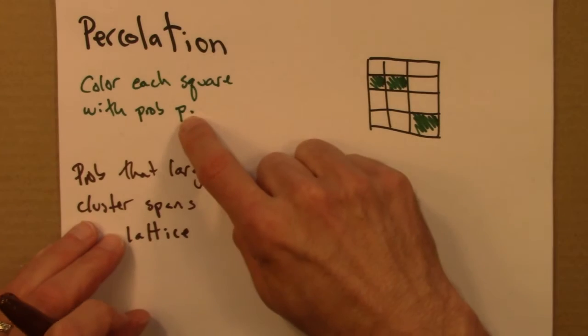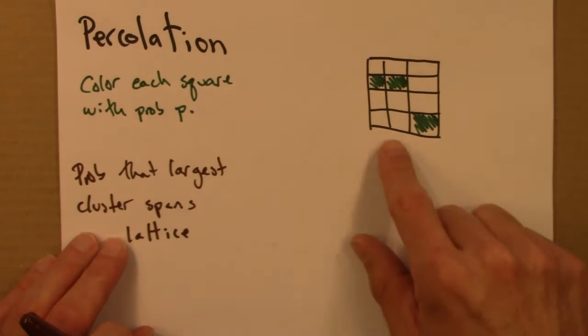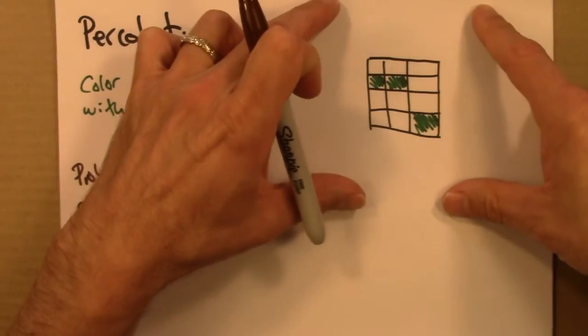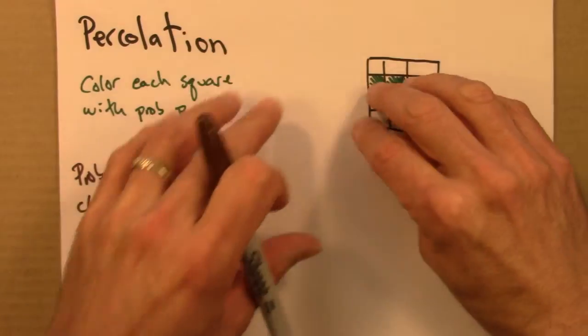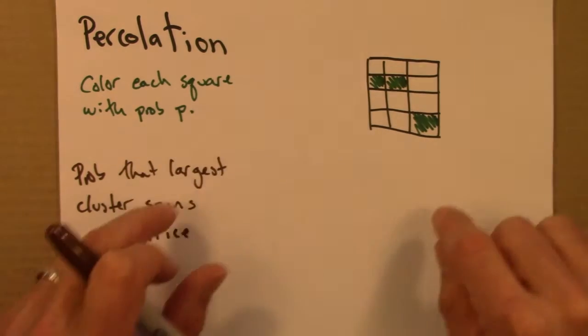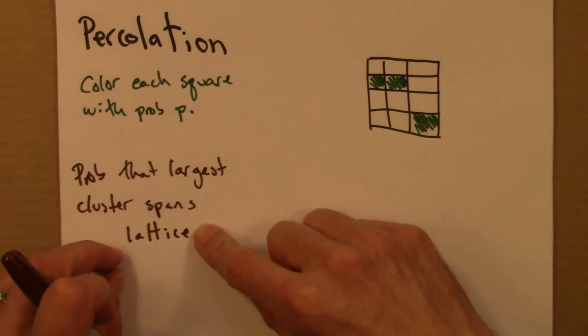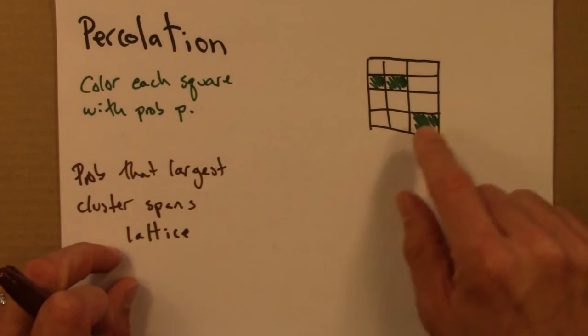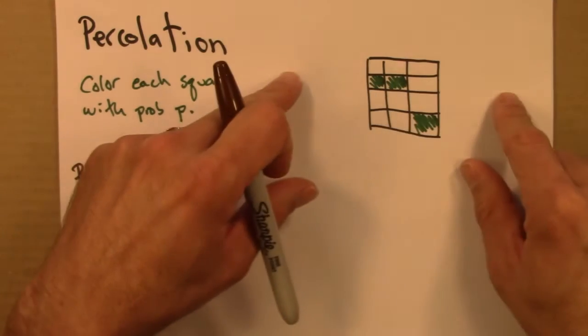So, if p is really small, 5%, 10%, we only color in 5 or 10%, it's going to be extremely unlikely that we're going to get a cluster that extends all the way from one side to another. On the other hand, if p is large, 90%, 95%, then almost surely, we would have a cluster that spans the lattice.